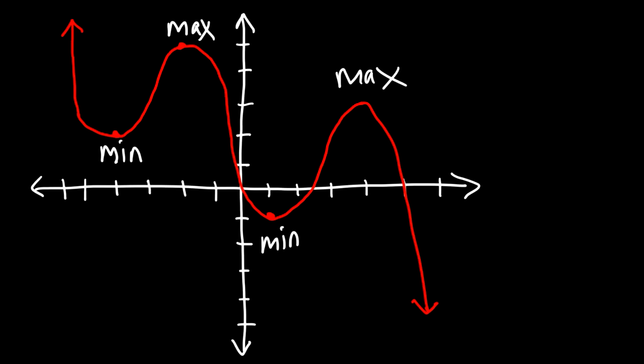So the first relative minimum is located at an x value of negative 4, and the second one is located at an x value of 1. The first relative maximum is located at approximately x equals negative 2, and the second relative max is at x equals 4. So that's the location of these extreme values.